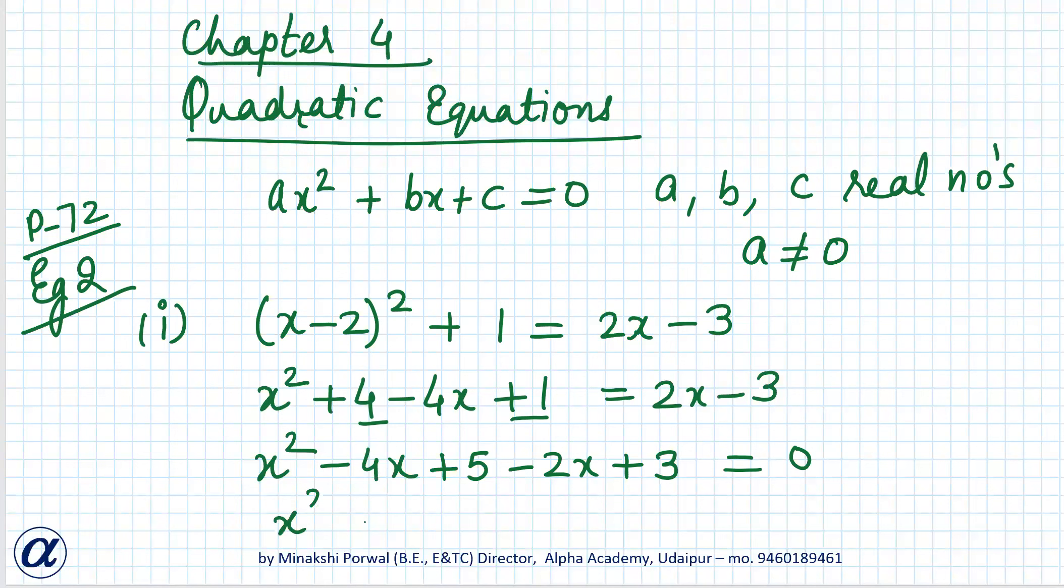x² - 6x, because -4x - 2x it will be -6x, 5 + 3 equals to 8 equals to 0. So comparing this equation with the standard form of equation, we can see that this is a quadratic equation.